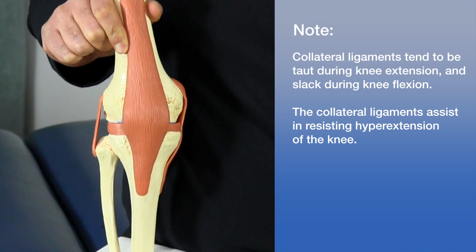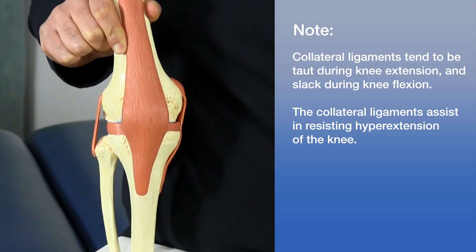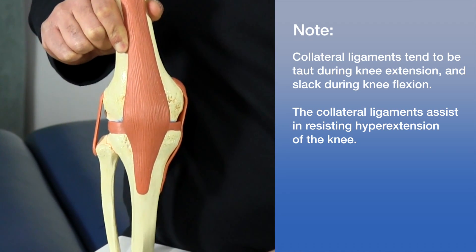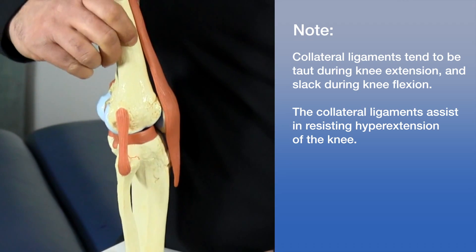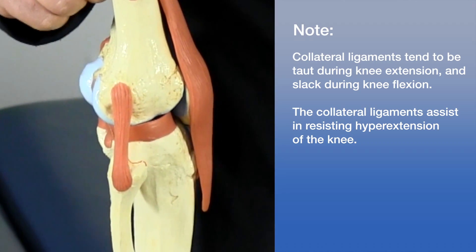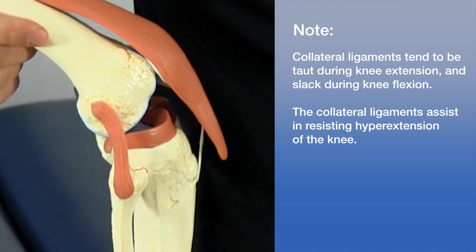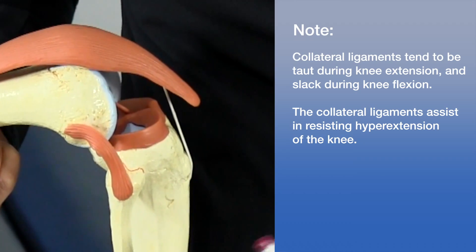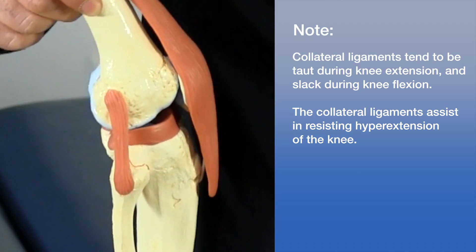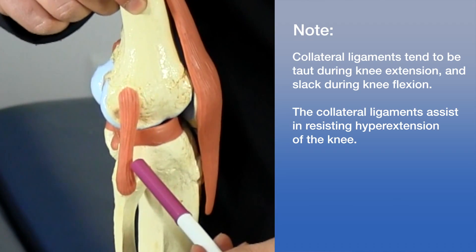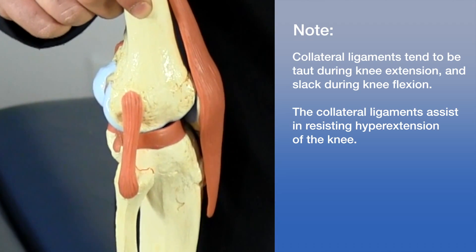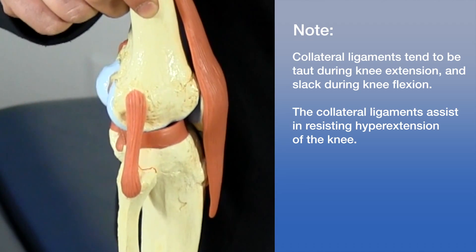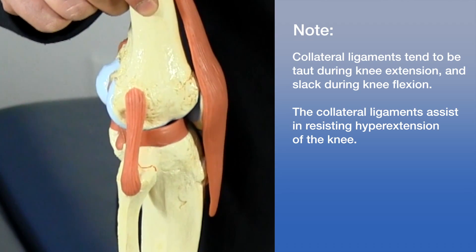An interesting point about the collateral ligaments is that they tend to be taut in extension and slack in flexion. Looking at the lateral or fibular collateral ligament — as we flex the knee, the ligament becomes slack, and as we move into extension, it becomes taut. The fact that they're taut in extension helps to resist hyperextension, preventing hyperextension knee injuries.